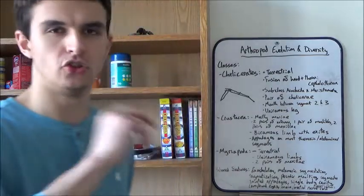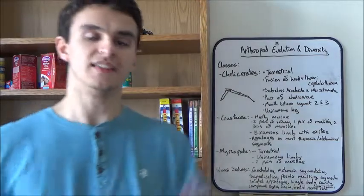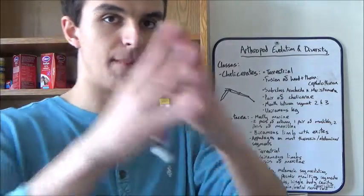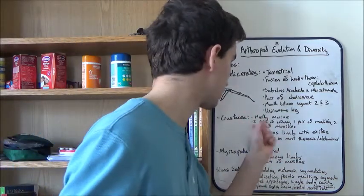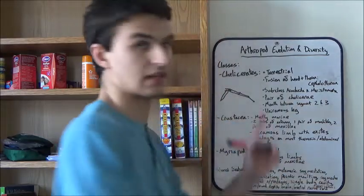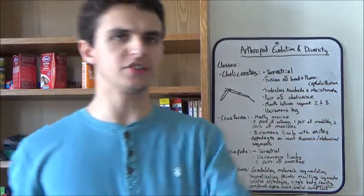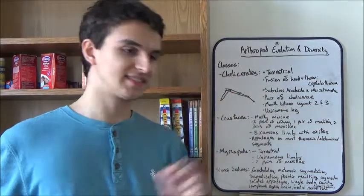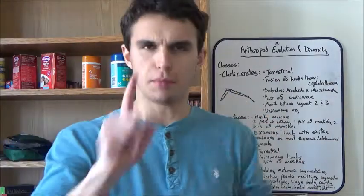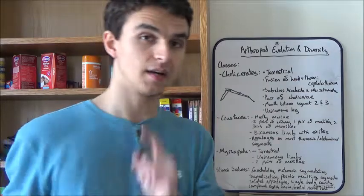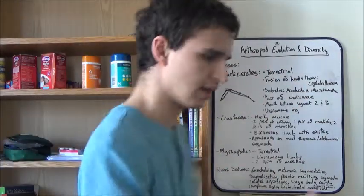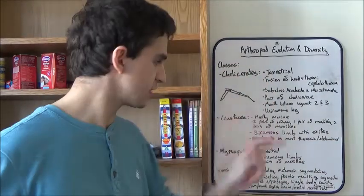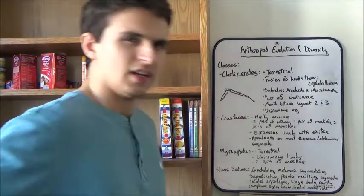Our third and final non-insect class of arthropods are the myriapods: the centipedes and the millipedes, or more properly Chilopoda and Diplopoda. Like the chelicerates, these are also terrestrial and have uniramus limbs. I bet you've always wondered how to tell the difference between a centipede and a millipede. The basic rule is that centipedes have one pair of legs per body segment, millipedes have two pairs of legs per body segment. Like the crustacea, they have two pairs of maxillae. Remember, insects only have one pair.